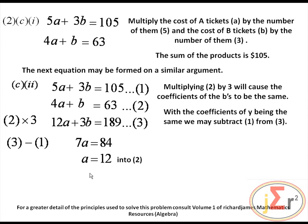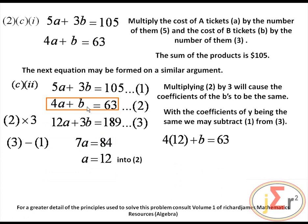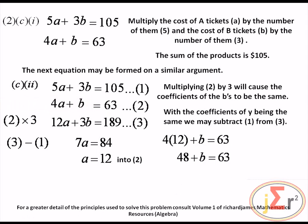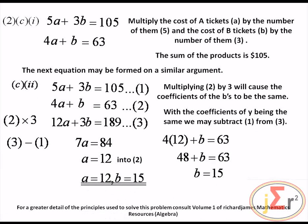Substituting A equals 12 into equation two: 4 times 12 plus B equals 63. That gives 48 plus B equals 63. Subtracting 48 from both sides, B equals 63 minus 48, which equals 15. Therefore, A equals 12 and B equals 15.